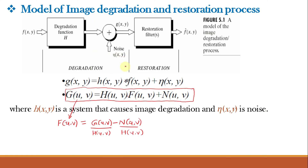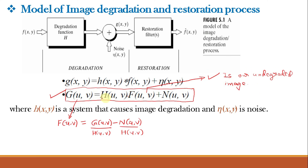We saw the image degradation and restoration model in the 23rd video class. The key equation is: g(u,v) = H(u,v)·F(u,v) + N(u,v), where g(u,v) is the output image, H(u,v) is the degradation function, F(u,v) is the original undegraded image, and N(u,v) is the additive noise. To obtain F(u,v), we rearrange: F(u,v) = [g(u,v) − N(u,v)] / H(u,v). If we assume noise is zero and we have full knowledge of the degradation, we can recover the undegraded image using inverse filtering.